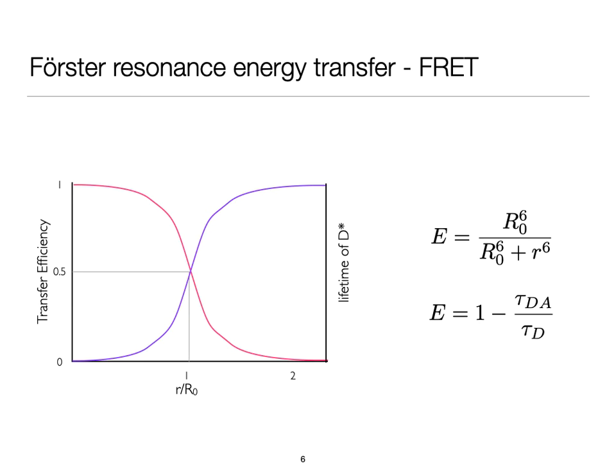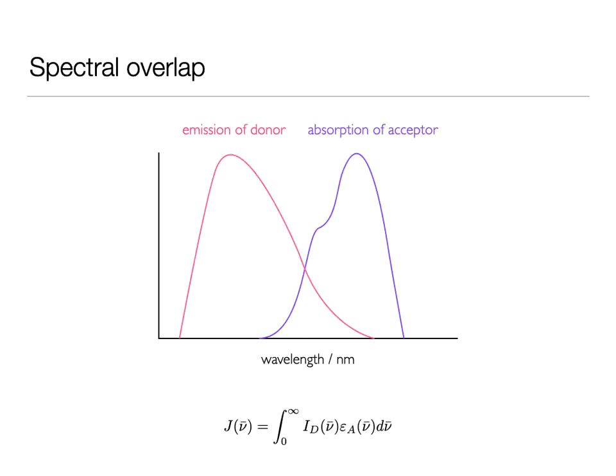So on the previous slide, I spoke about spectral overlap, but what actually is that? Well, it does exactly what it says on the tin, really. I have my emission of my donor here on the left in the pink line, and I have my absorption of my acceptor, and the greater the overlap here, the more efficient the energy transfer.